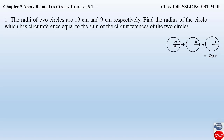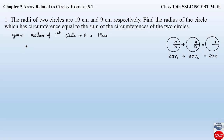Let us assume the radius of the first circle to be r1 and the radius of the second circle to be r2. So the circumference of the first circle will be 2πr1 and the circumference of the second circle will be 2πr2. Given: radius of the first circle r1 equals 19 centimeters, radius of the second circle r2 equals 9 centimeters. Let r be the radius of the required circle.